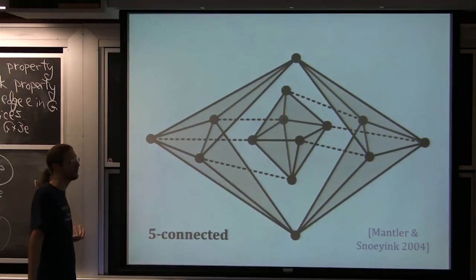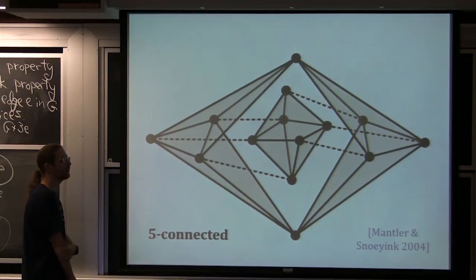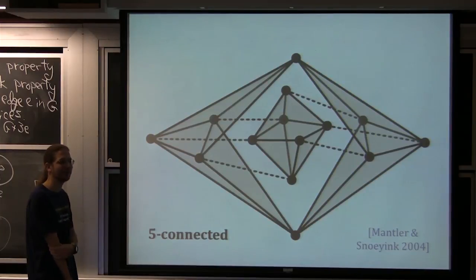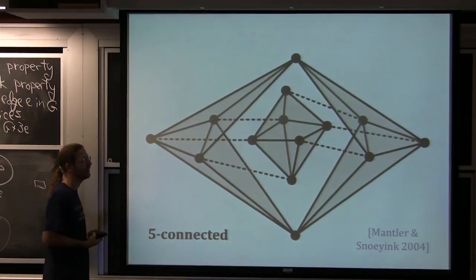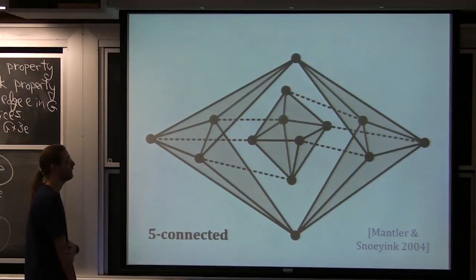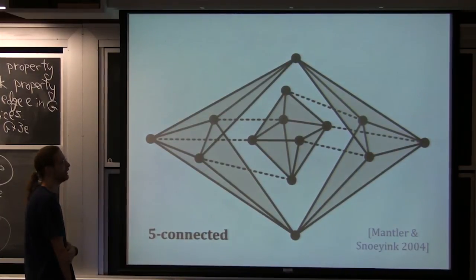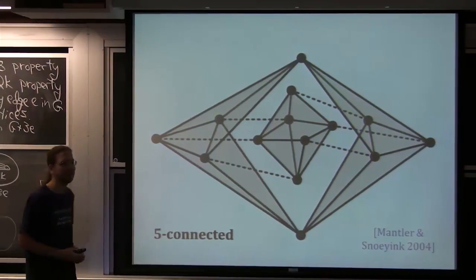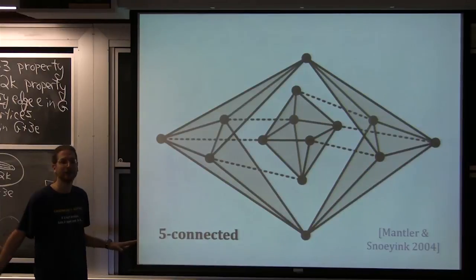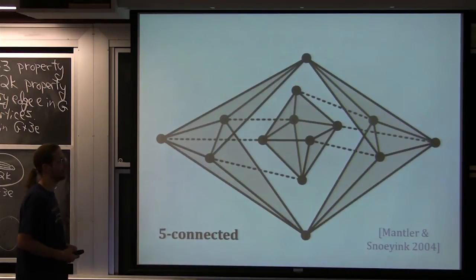Connectivity doesn't help us determine 3D vertex-and-bar rigidity. This remains a tough open problem — we don't know how to characterize generic rigidity for vertex-and-bar structures in 3D. Any questions? That's it for today.